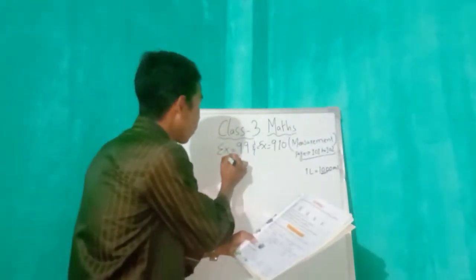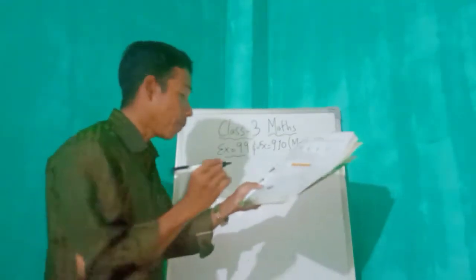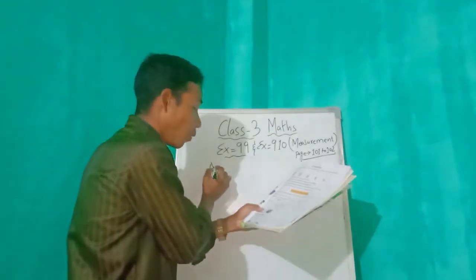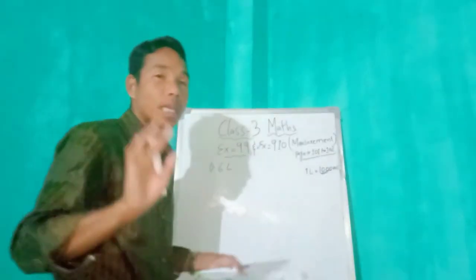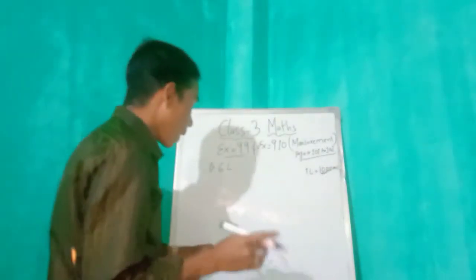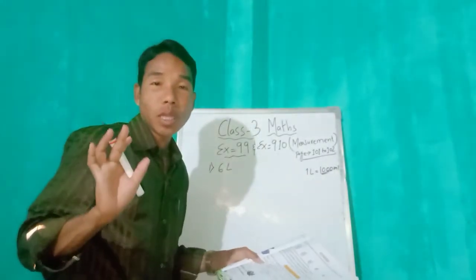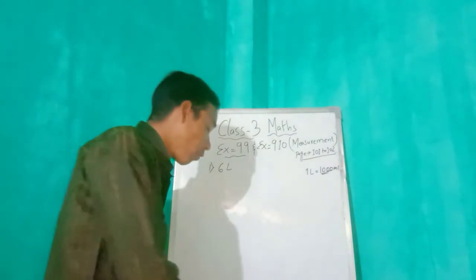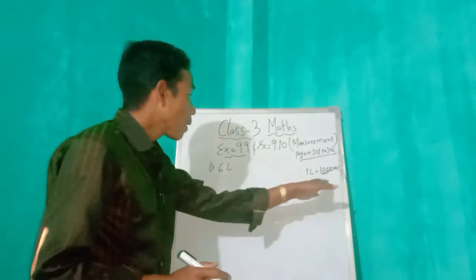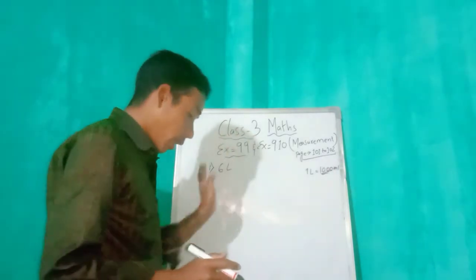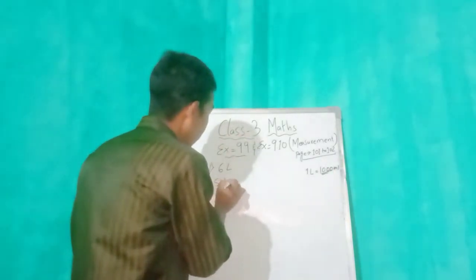Number one: we have six liters. How will we do it? Look — one liter equals 1000 milliliters, so we will convert six liters into milliliters. Let's see the solution.